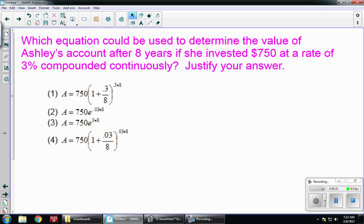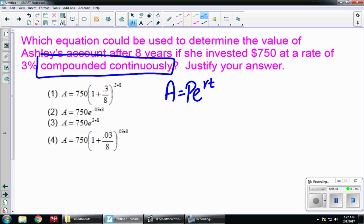All right, which equation could be used to determine the value of Ashley's account after eight years if she invested $750 at a rate of 3% compounded continuously? And then they want us to justify our answer. So continuously is the formula A equals PE to the RT. That's what compounded continuously means. So automatically I can cross off choices one and four. And now I'm looking between two and three, and the only difference is the rate. The 3% you have to convert to a decimal of .03. So my answer is choice two because that was correctly converted from a percentage to a decimal.